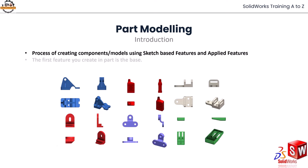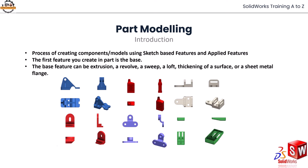Whenever we start doing part modeling, the first feature we make in the software is called a base feature. That base feature can be an extrusion, a revolve, a sweep, a loft, a thickening of a surface, or a sheet metal feature.